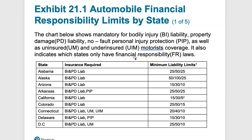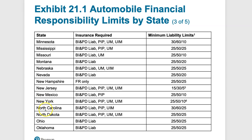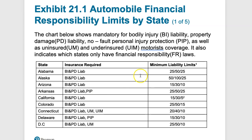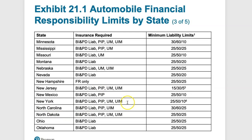If we look at the slide, these acronyms represent what's required by state. A state like Connecticut will have requirements for bodily injury, property damage, and liability. Some states like DC will have uninsured motorist coverage as well. Some states like Delaware will have PIP, the no-fault personal injury protection. Most people in this class will be from New York, which has pretty much everything required: uninsured motorist, underinsured motorist, no-fault personal injury protection, bodily injury, and property damage. New York has very comprehensive insurance requirements.